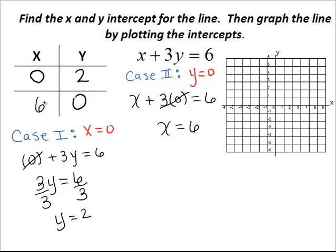6, 0. Now we have two points, our y-intercept and our x-intercept. We will graph each of them. The first point to graph is 0, 2.